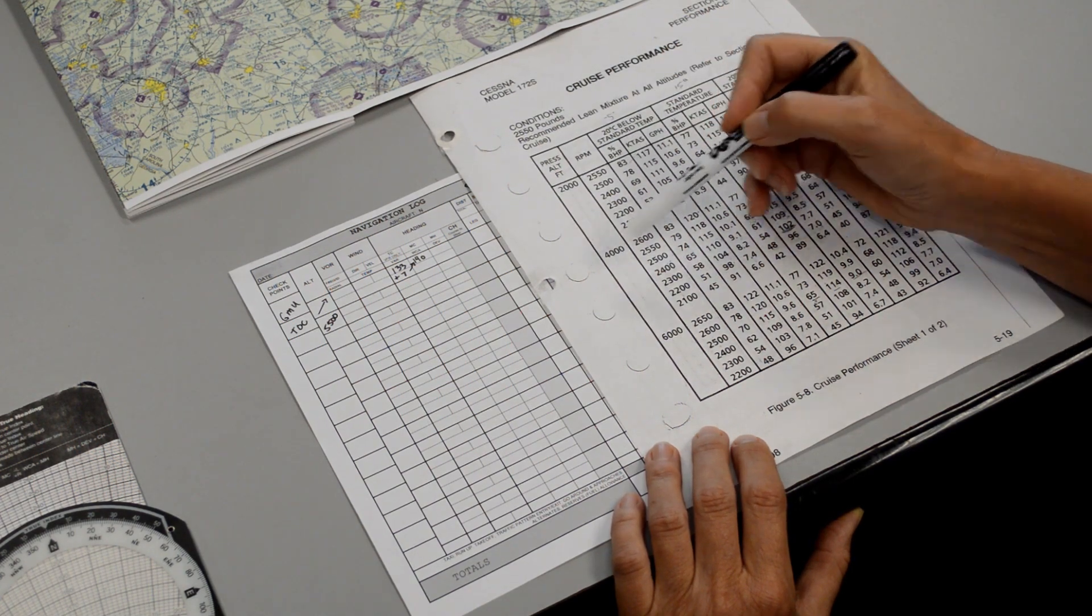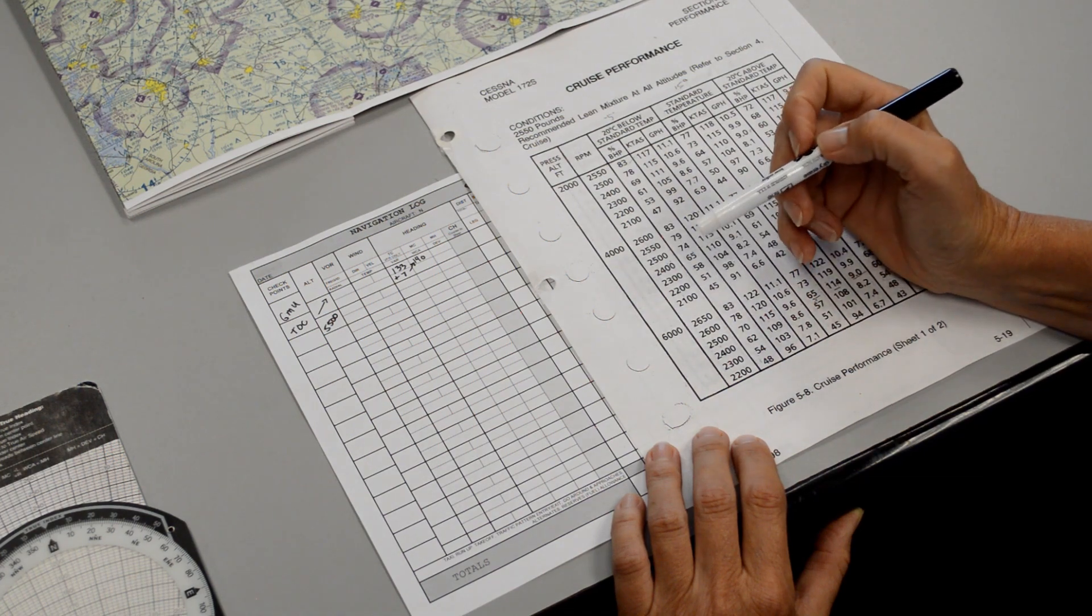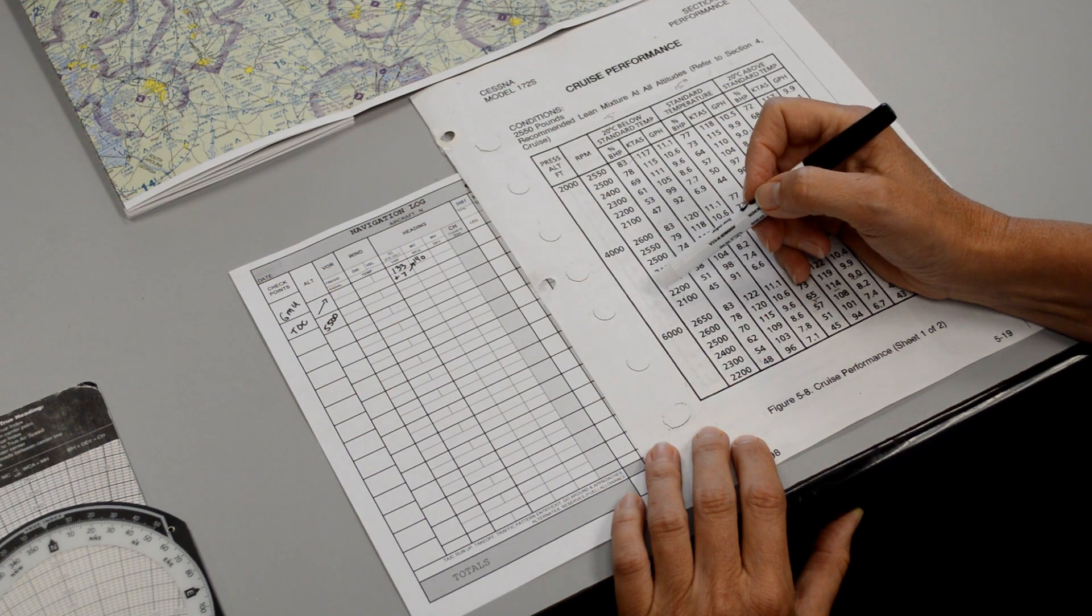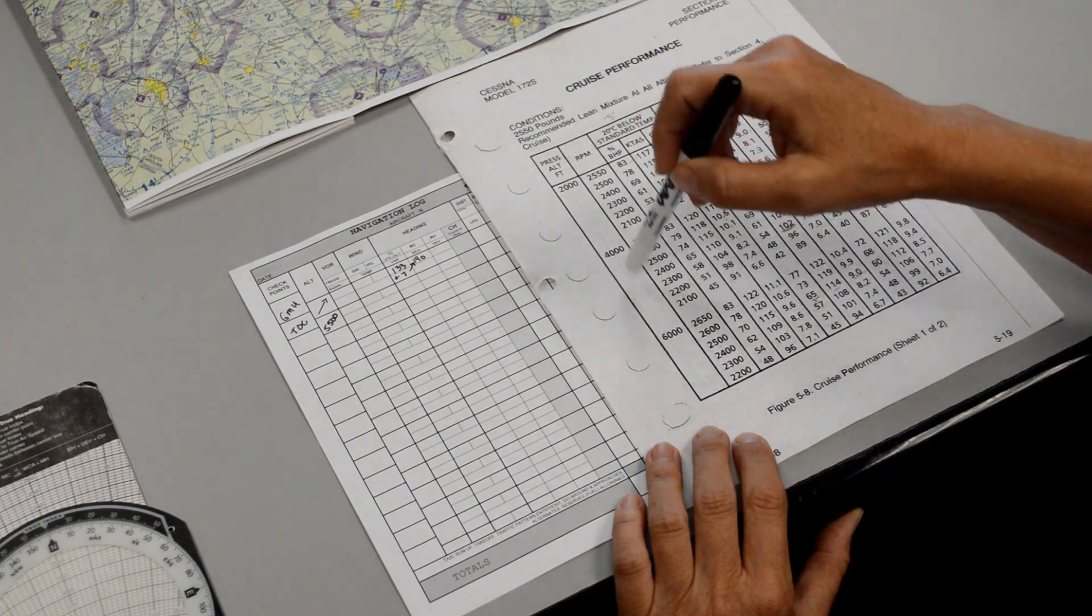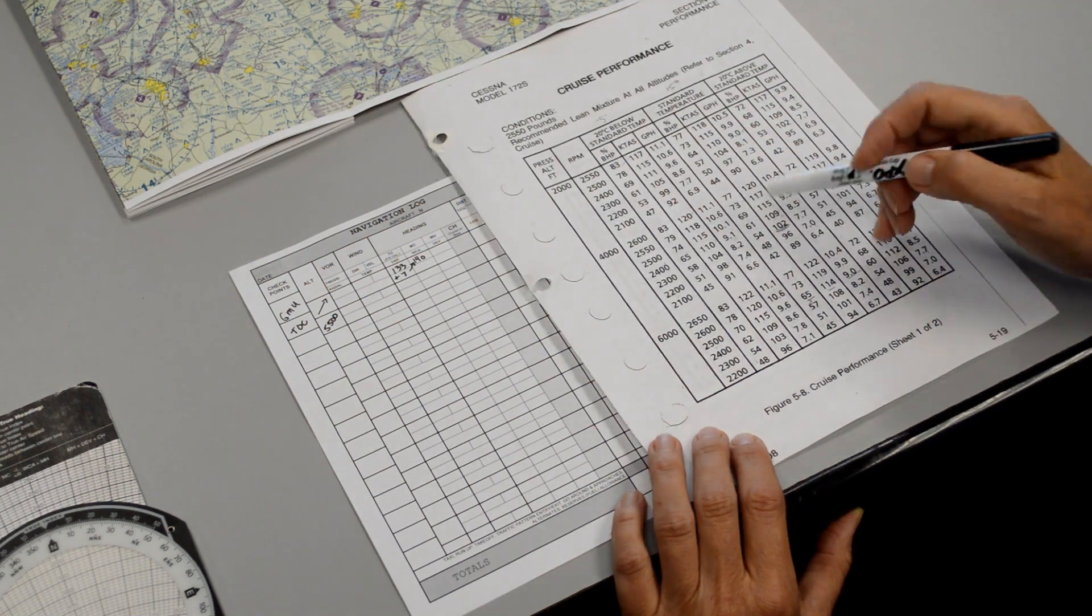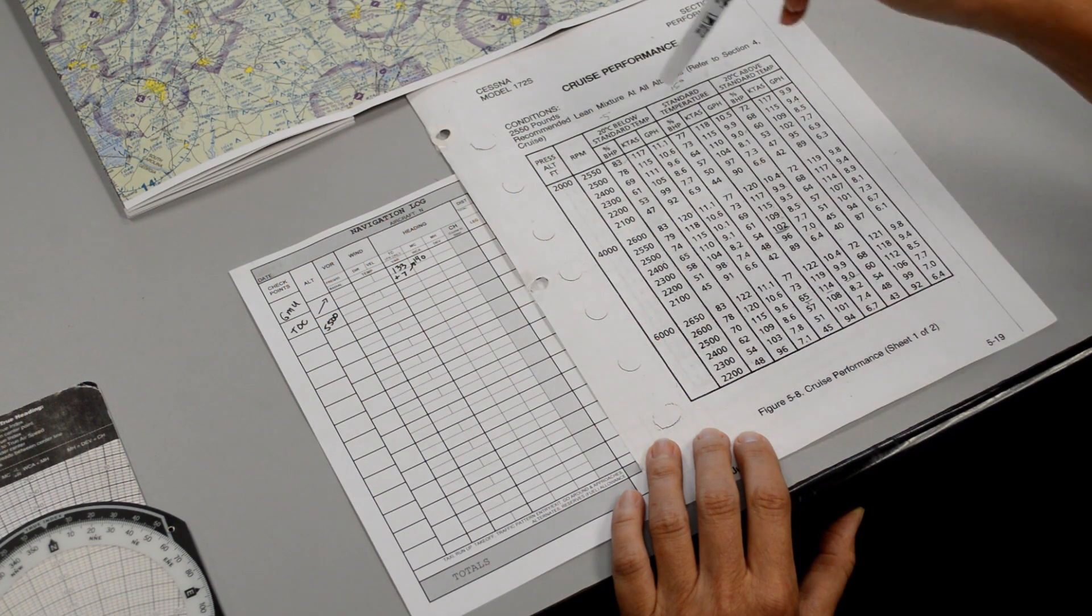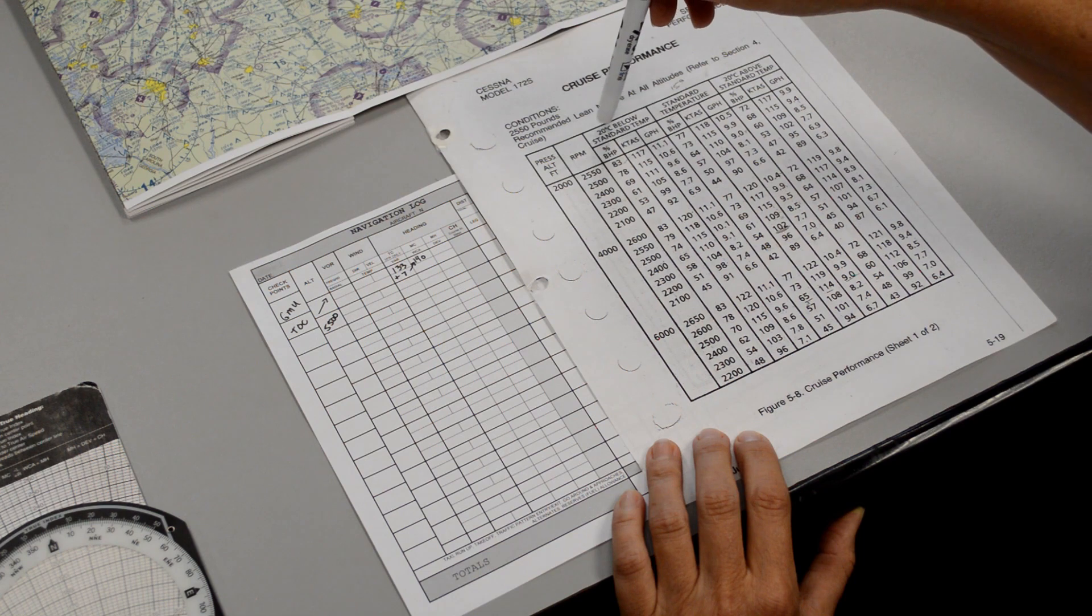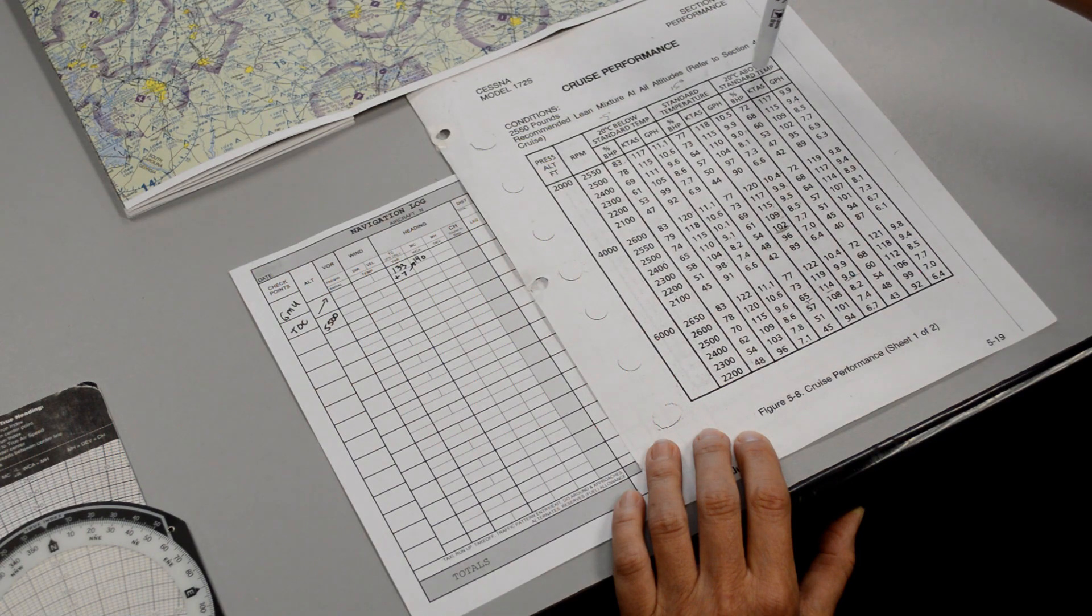We look down the pressure altitude column. We have 2,000, 4,000, and 6,000. We are going to fly at 5,500, but we had calculated our pressure altitude to be 5,000, so we can interpolate between these two. Then we look over to see what RPM selections are available. We have three different columns: 20 degrees below standard, standard temperature, or 20 degrees above standard.